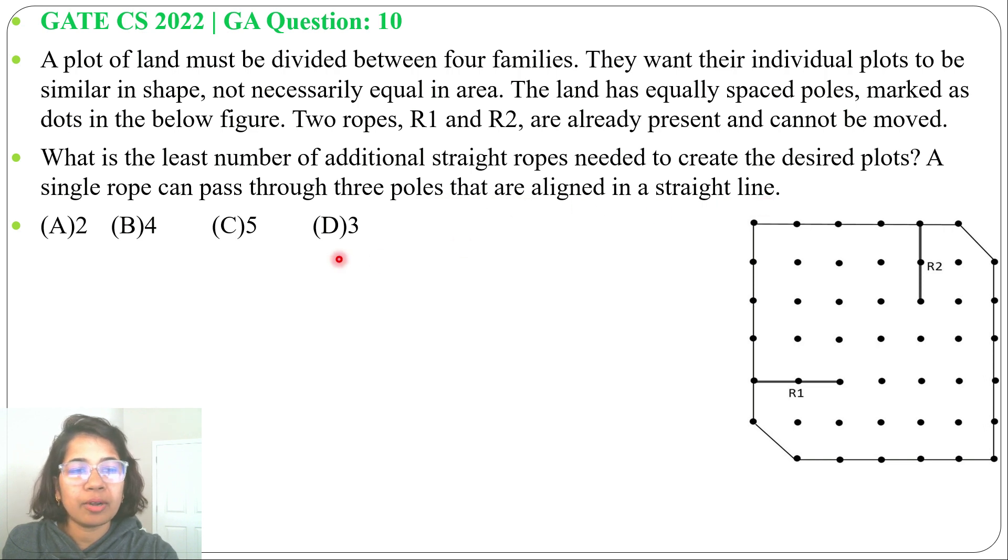And four options are given. In this land there are already two ropes R1 and R2. We need to add some more ropes to divide into four plots.